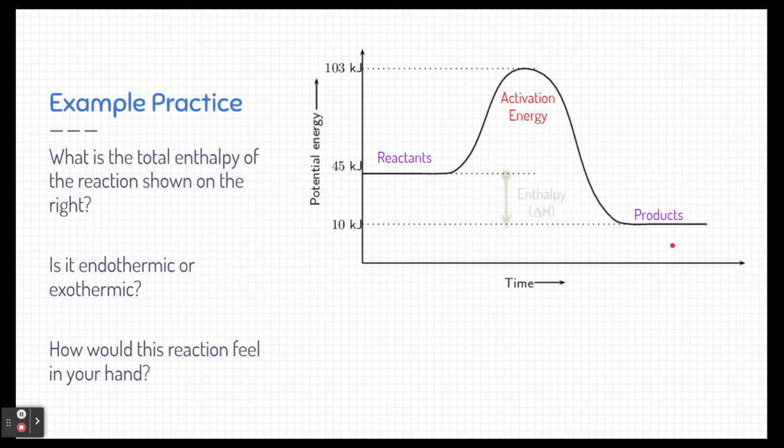So I'm going to go ahead and calculate the total enthalpy, which we can see is decreasing overall. The total enthalpy change is the products minus the reactants. So I'm going to take my 10 kilojoules of energy of my products and subtract the 45 kilojoules of energy that my reactants started as. This is going to give me a negative ΔH or a negative enthalpy, specifically negative 35 kilojoules. That's the total enthalpy of the reaction.